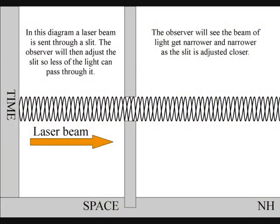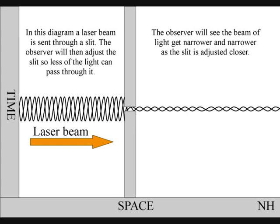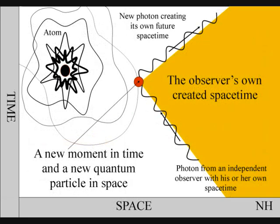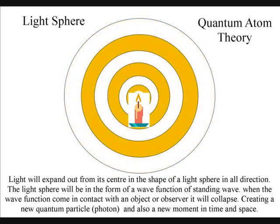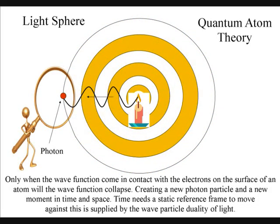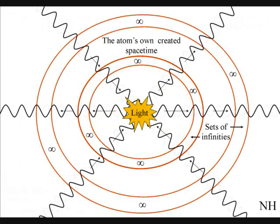In this diagram, a laser beam is sent through a slit. The observer will then adjust the slit so less of the light can pass through it. The observer will see the beam get narrower and narrower as the slit is adjusted closer. But when the slit gets to the quantum level, the light will start expanding into a quantum wave-particle function. When this wave function comes in contact with an object or observer, it will collapse into a new moment of time and space. In this way, creation is being created continuously.